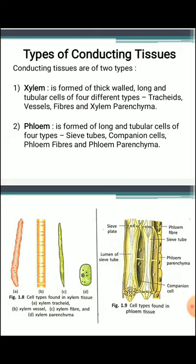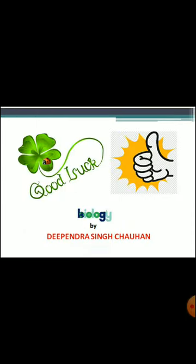In summary, plant tissues are classified according to their structure and specific function. Meristematic tissue is responsible for growth and is divided into three parts. Simple permanent tissue — made up of one type of cell — provides protection (epidermis or cork) or support (parenchyma, colenchyma, sclerenchyma). Complex permanent tissue is made up of more than one type of cell and forms the conducting tissues xylem and phloem. Thank you for watching — please subscribe to learn more and stay updated on your syllabus.